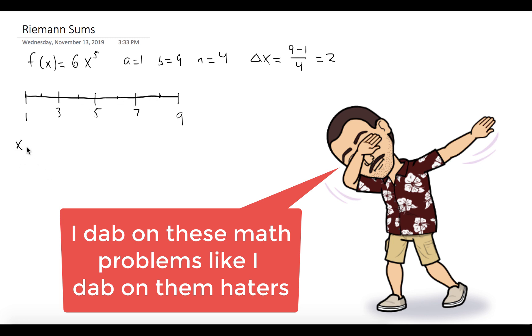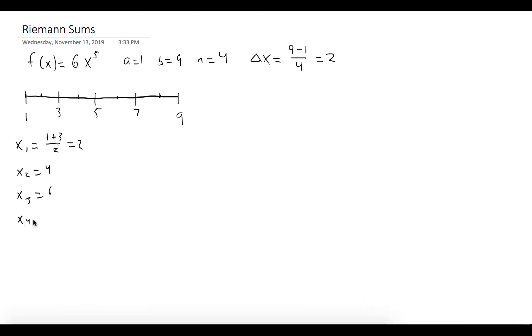So the first midpoint, x₁, is (1 + 3)/2, which is 2. The next midpoint is 4, the next midpoint is 6, and the last midpoint is 8. And so that's basically all the information we need.